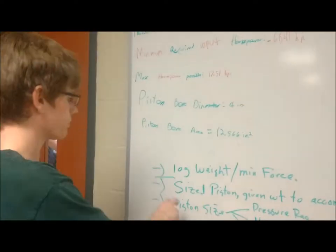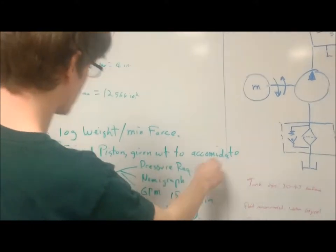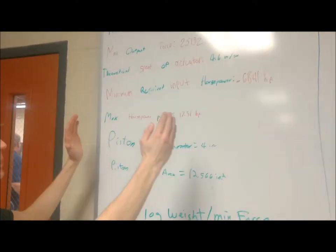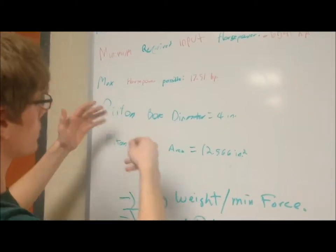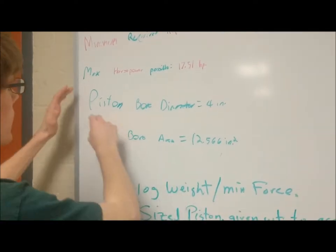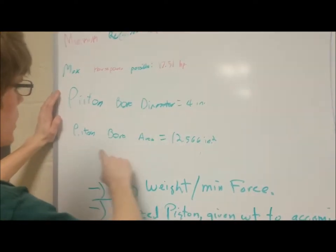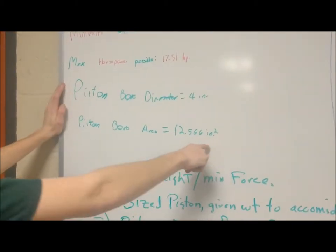And from there, we sized the piston to accommodate just that. We determined the piston size - we fiddled around with it just to see what we liked best - and that was a bore diameter of 4 inches and a bore area of 12.566 inches squared.